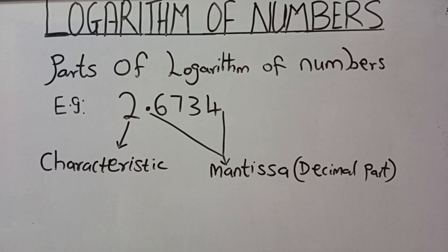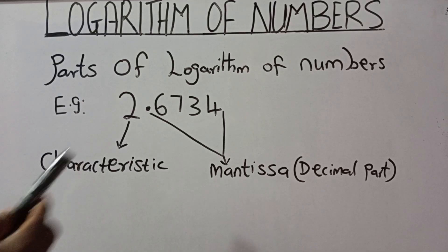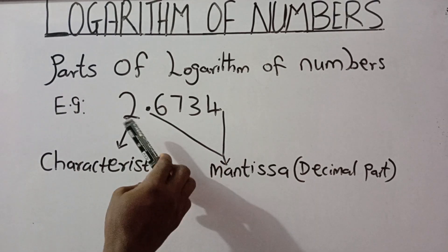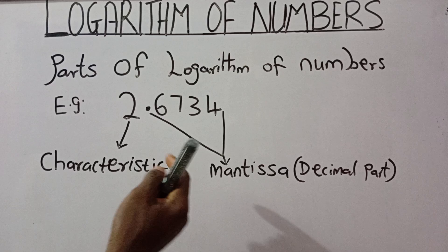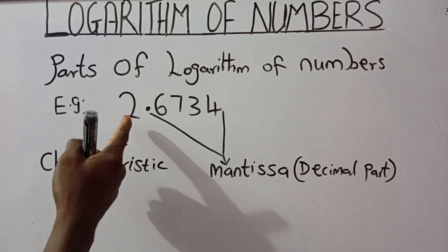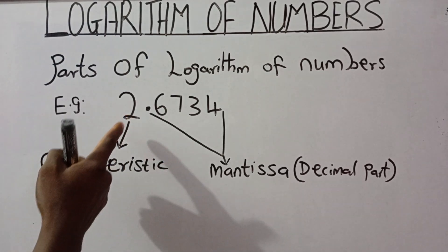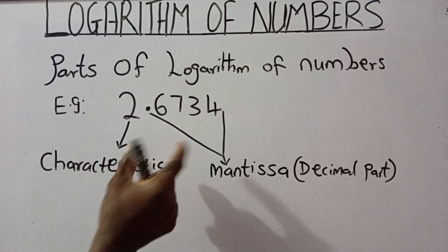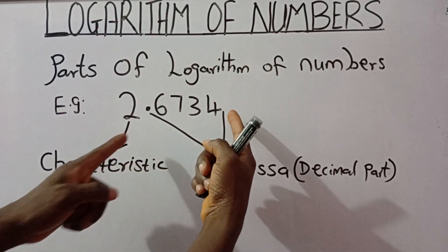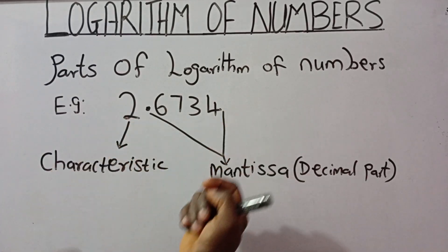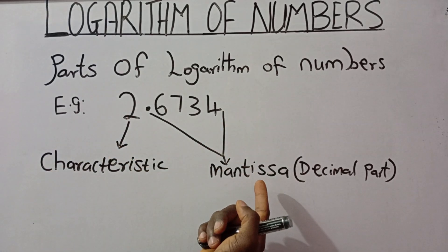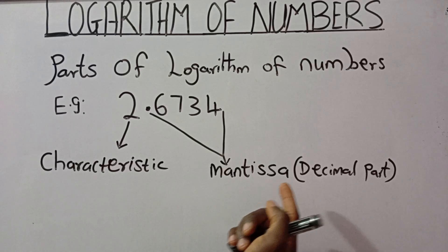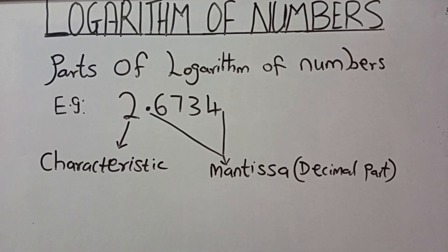Parts of logarithm of numbers. A logarithm is made up of two parts. The first part is the whole number part, which is called the characteristic. Then the decimal part beginning from the decimal point is called the mantissa. The mantissa is the decimal part of that particular logarithm of numbers.